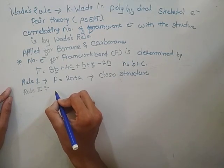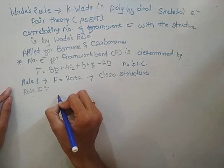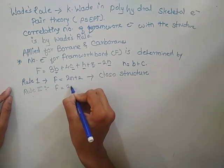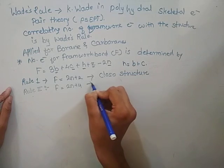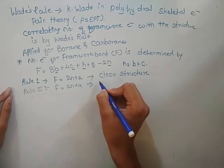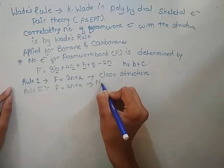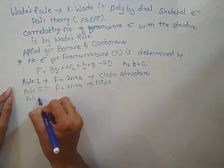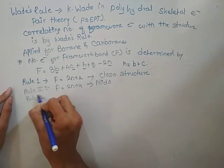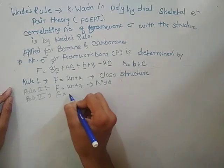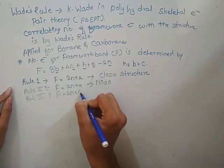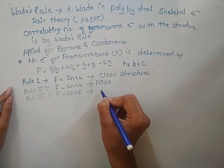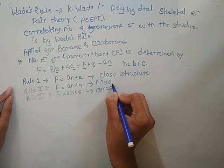If F is equal to 2N plus 2, the structure is closo. If F is equal to 2N plus 4, the structure is nido. If F is equal to 2N plus 6, the structure is arachno.